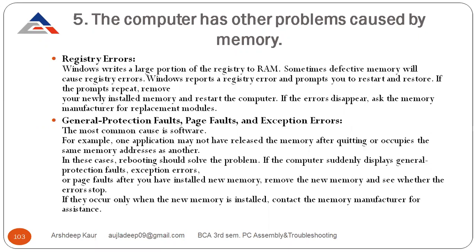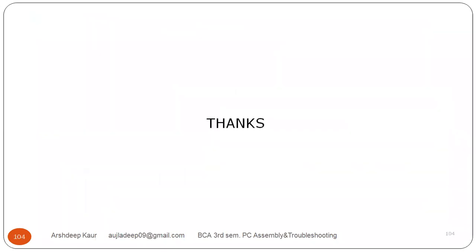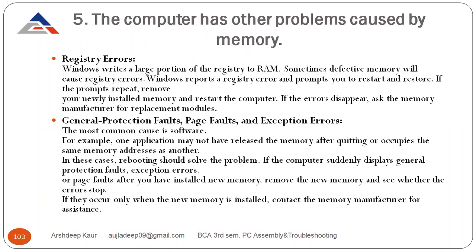General protection faults, page faults, and exception errors are most commonly caused by software. For example, one application may not release memory after quitting, or may occupy the same memory address as another application — rebooting should solve this. If a transaction is using two resources and completes but does not release those resources, new transactions will think the resources are busy, causing a problem. You can install new memory or remove new memory to see whether the error stops. Take care of all the parameters and factors discussed.